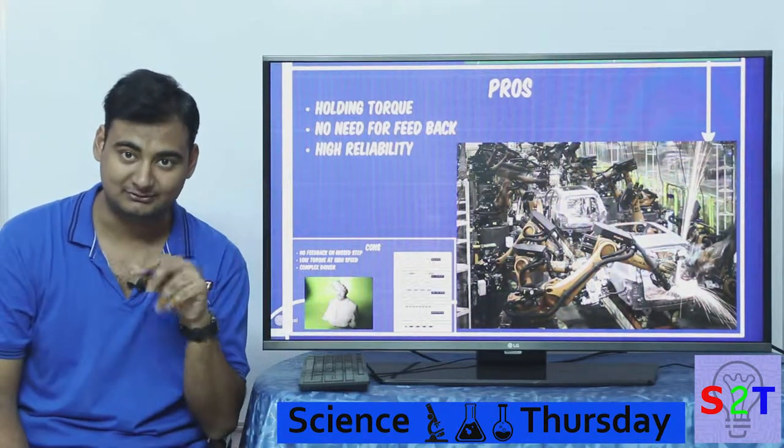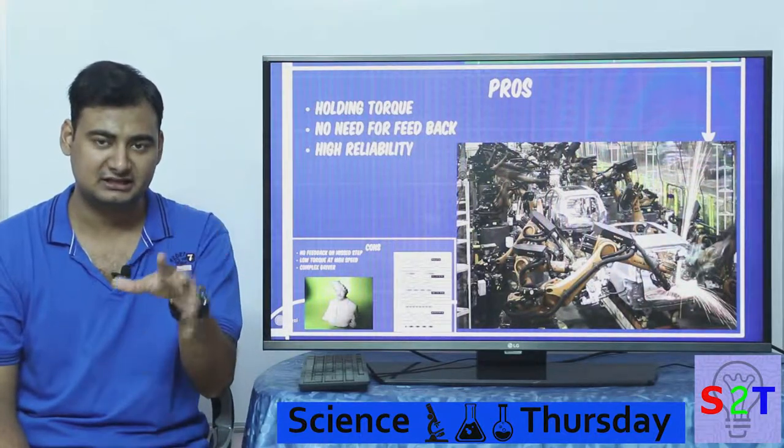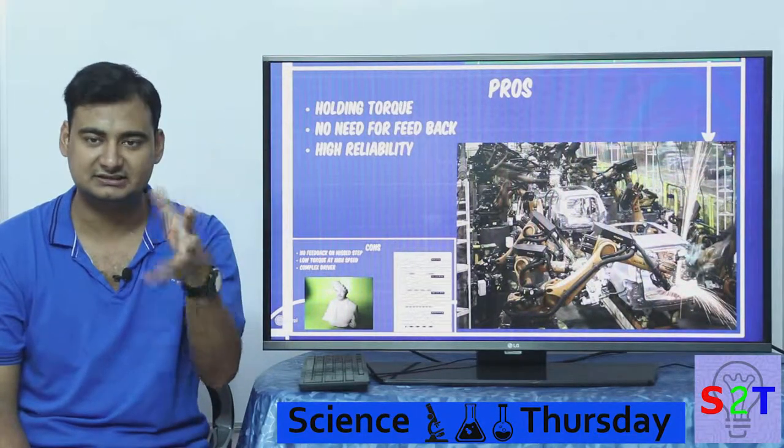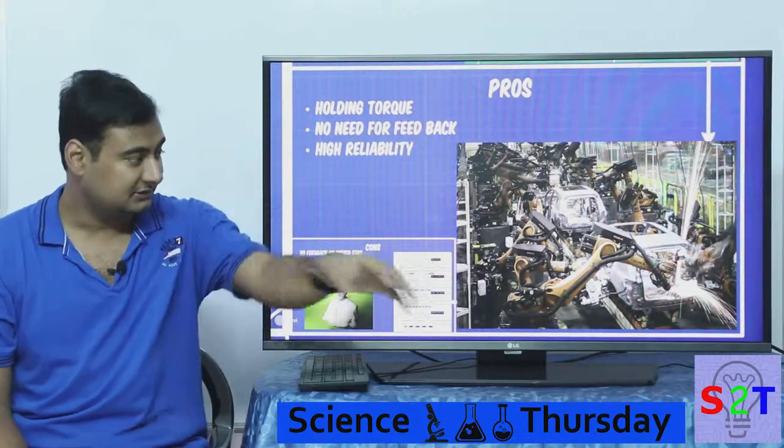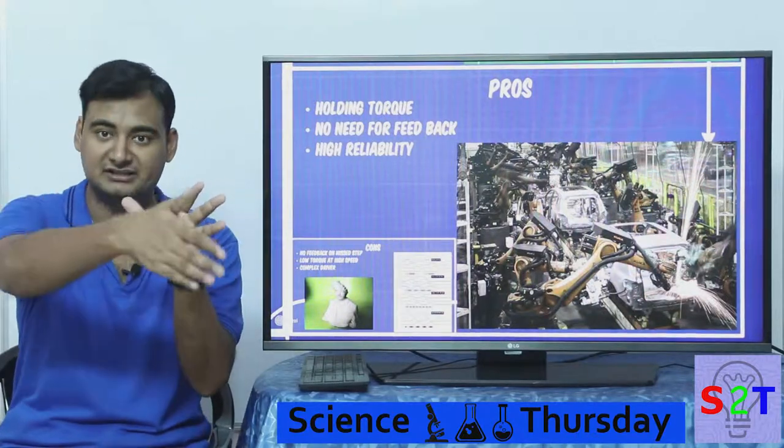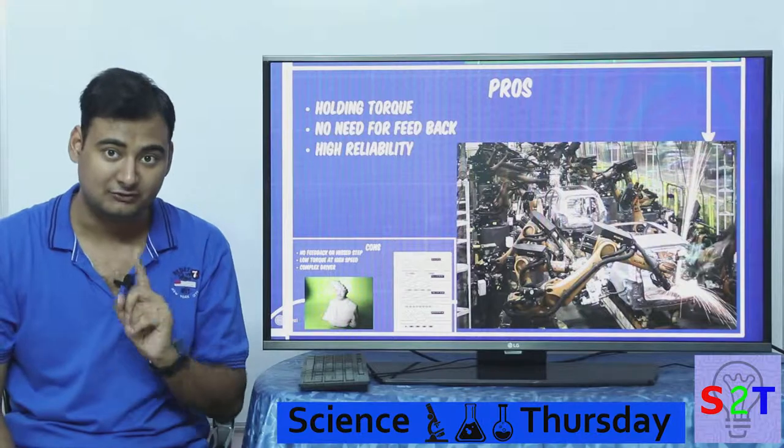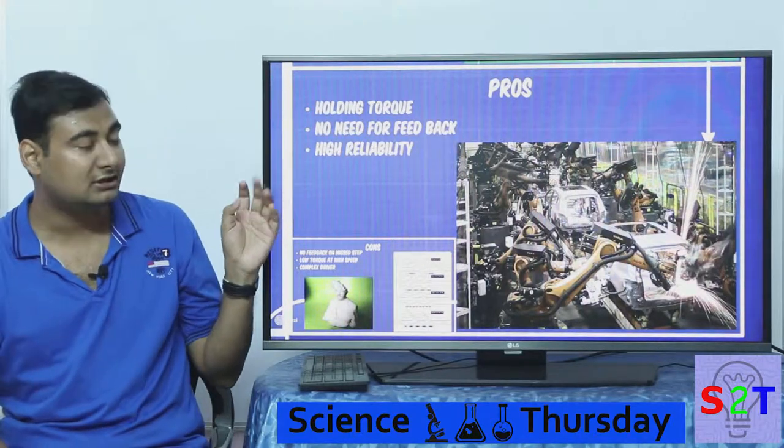Of course they will also apply brakes because holding torque is not free - you have to spend electricity on it. So they will do it, and if it's like small instant, like you know only for one second, they have to do like this, they wouldn't bother with brakes. But if let's say this robot has to lift that car and be like this for five seconds, five minutes until that another robot does, then they will apply brakes.